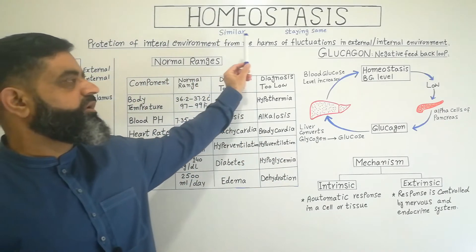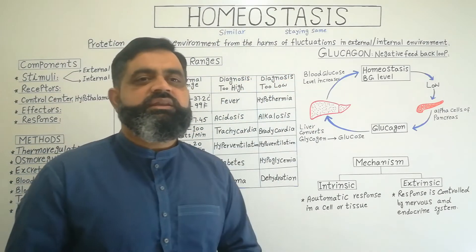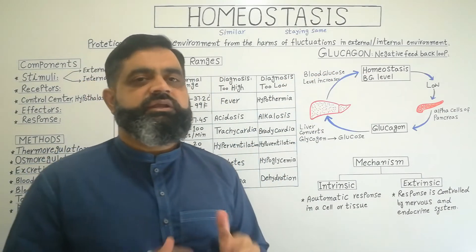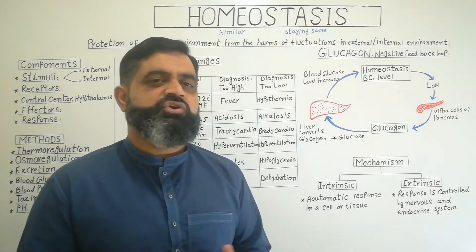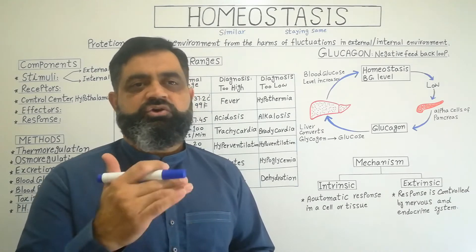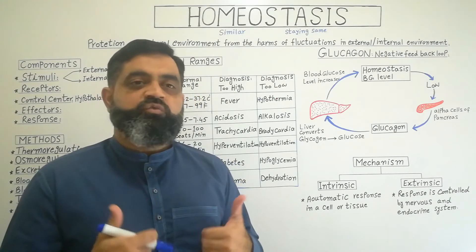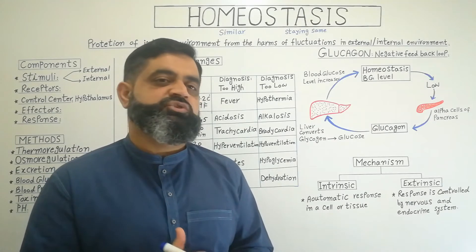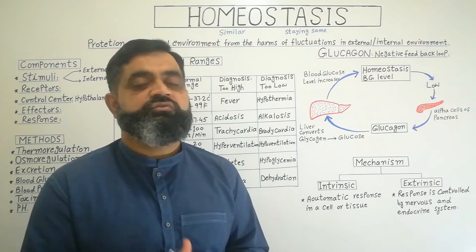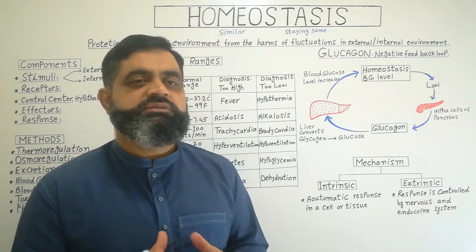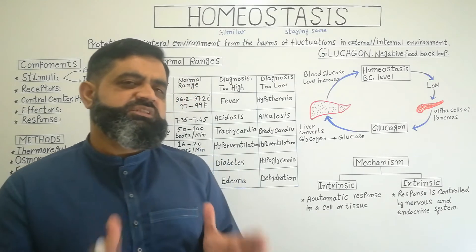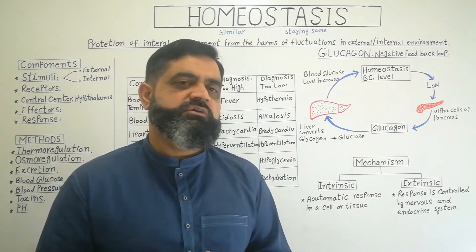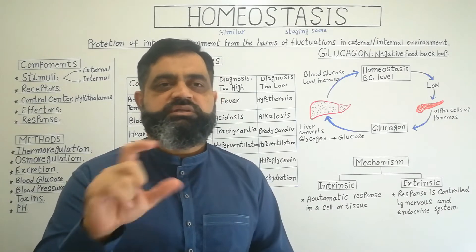We have to protect the internal environment from the harms of fluctuations — increases and decreases — in the external or internal environment. For example, outside temperature can increase or decrease rapidly, and the body's internal water concentration can also change. So, protecting the body's internal environment from the harms of these fluctuations is known as homeostasis. This is a complicated system and needs many lectures to fully describe, but I will give an overview so you can understand the concept.